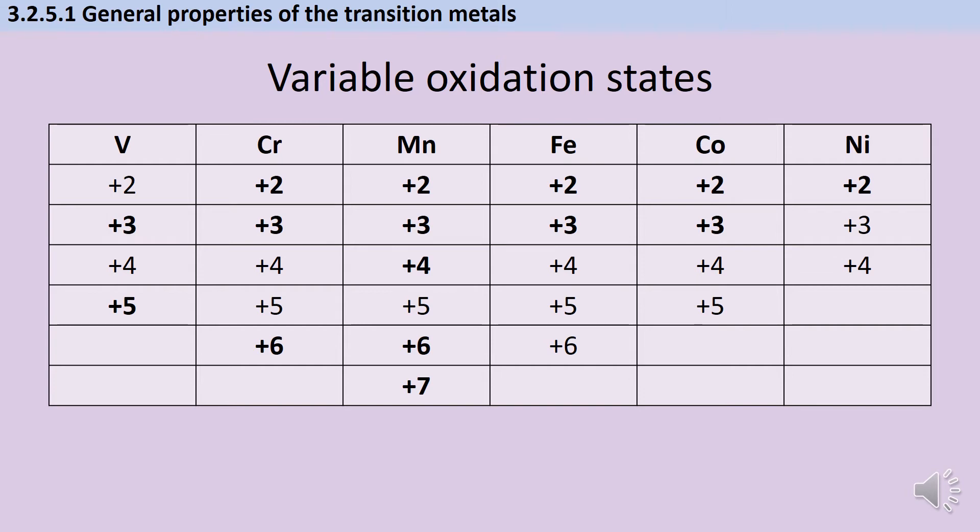Here are some examples of oxidation states that these metals can take, and the ones in bold are the particularly common ones. For instance, we've just mentioned that vanadium can produce ions in which it has an oxidation state of +2 or +3 or +4 or +5, and +3 and +5 are the particularly common ones. Likewise, chromium can do everything from +2 up to +6, but the particularly common ones are +2, +3, +6, the hexavalent chromium and so on and so forth.